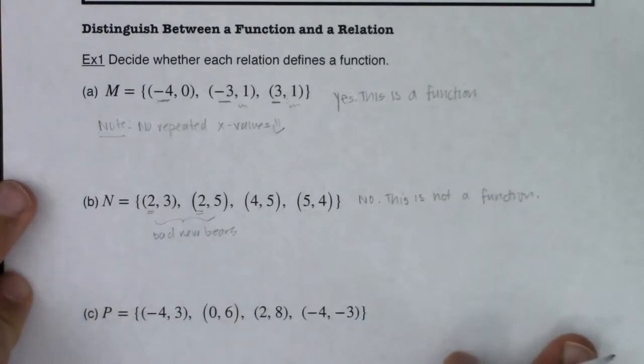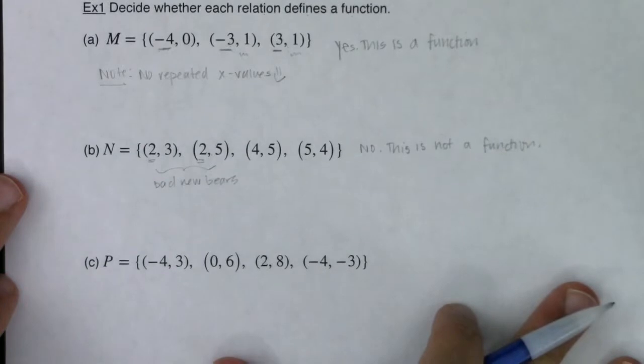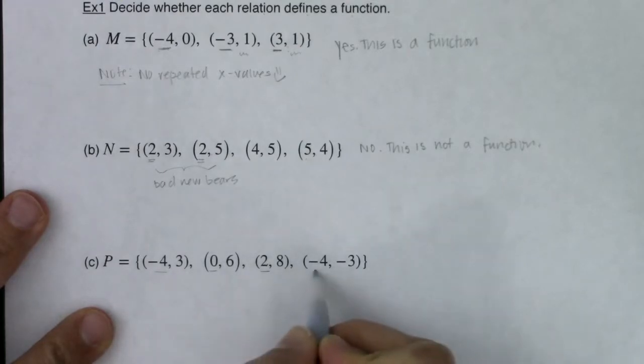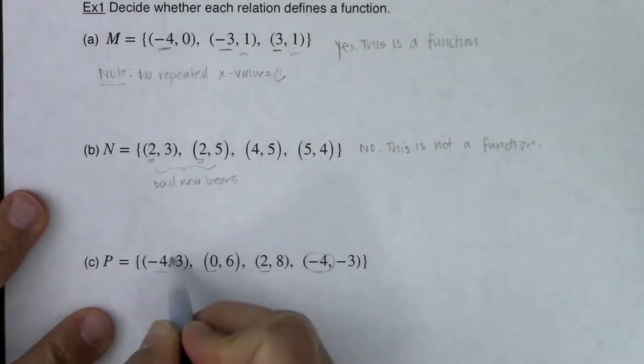So with that, let's take a look at the relation in part C and see if we can figure out is this relation a function or not. I'm going to scooch this up so we can see everything. Let's take a look at our X coordinates. I've got negative 4, 0, 2, and negative 4. And maybe you heard it. I had a repeated X value.